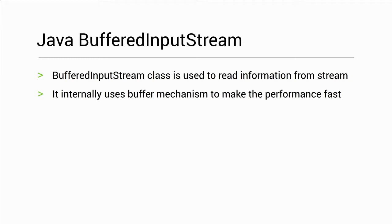Suppose you have 2GB of data in your file and there is a change in that data. To send 2GB of data, you can read a character at a time, or you can read it the same way using a stream.